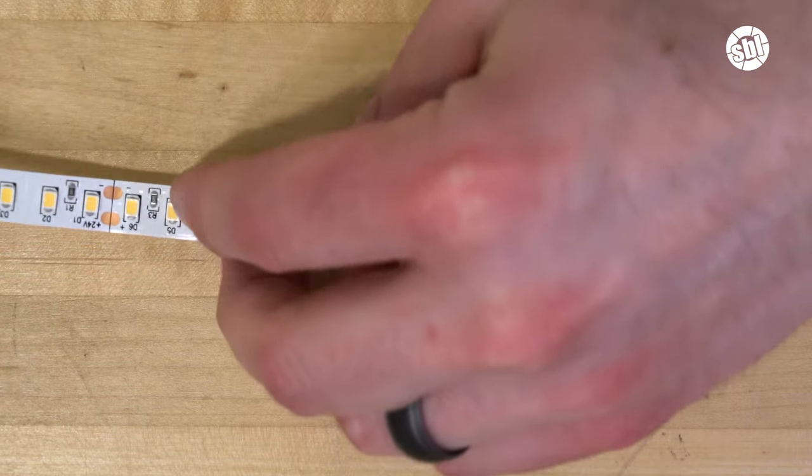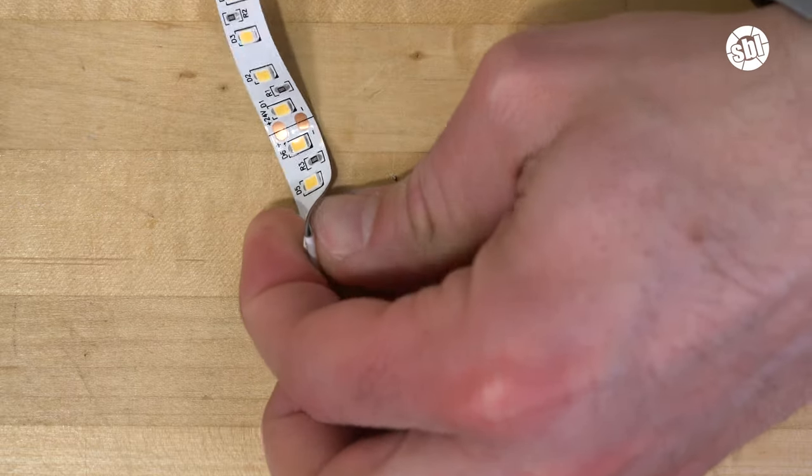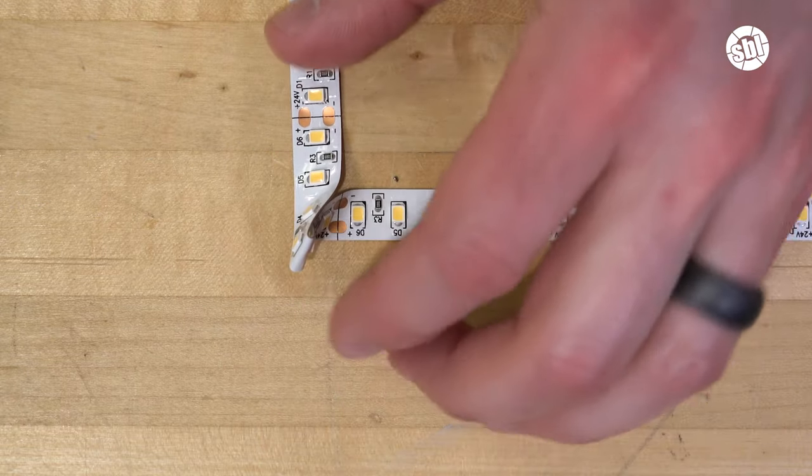You can bend the strip light in what is known as a 90 degree pinch. This won't hurt the strip light, and you can use a little bit of super glue to hold the pinch in place.